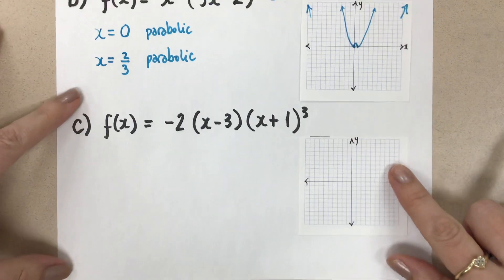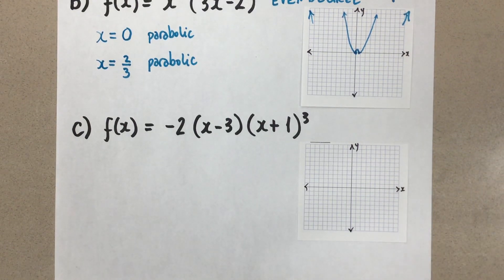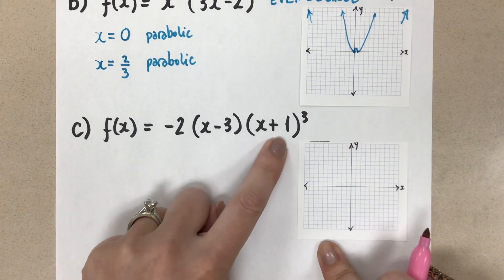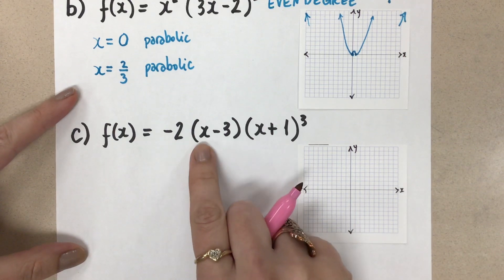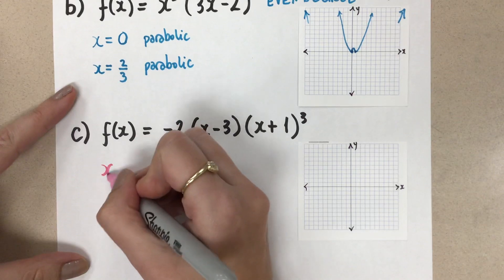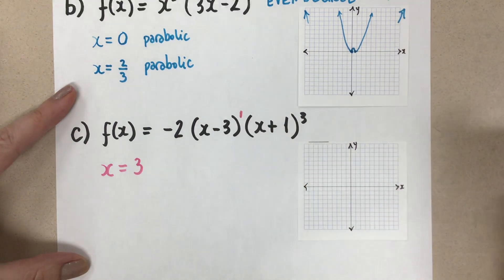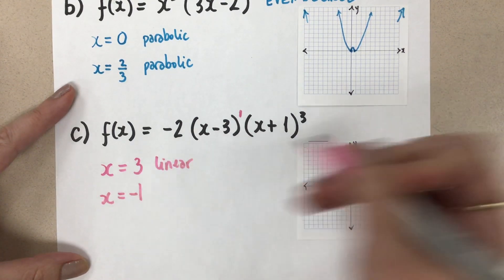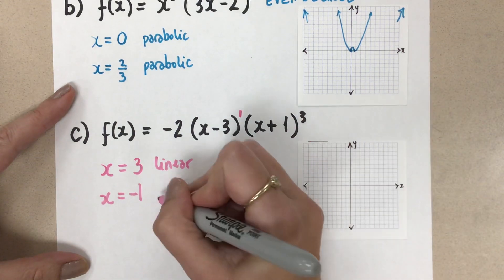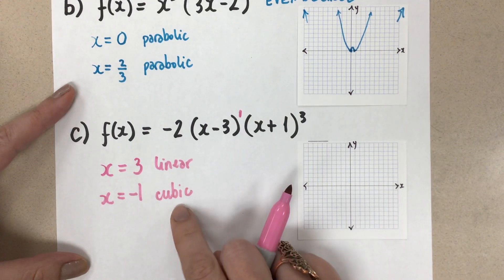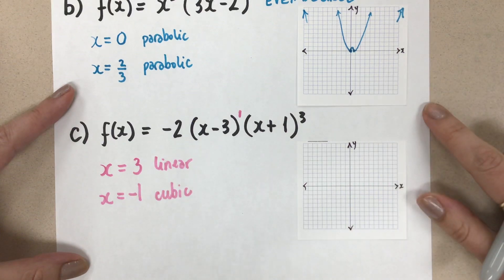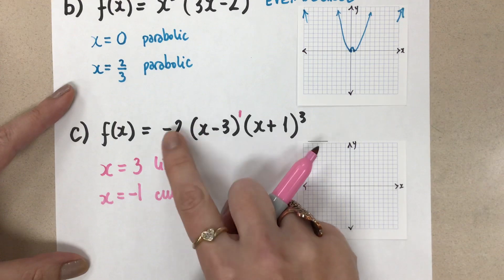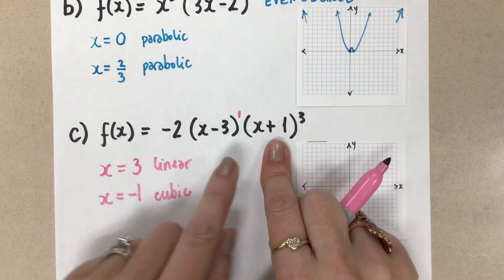Our last example is f(x) = −2(x − 3)(x + 1)³. There is no x factor in front — there are two separate factors. The factor (x − 3) gives us a zero at x = 3 with exponent 1 — a linear zero. The factor (x + 1)³ gives us a zero at x = −1 with degree 3 — a cubic zero, creating an inflection point at that root. The function will pass straight through x = −1 at an inflection.